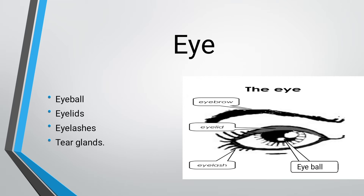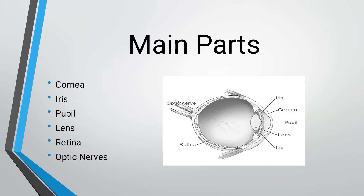The main parts of the eyes are: cornea, iris, pupil, lens, retina, and optic nerves. Here is the diagram of the eye.